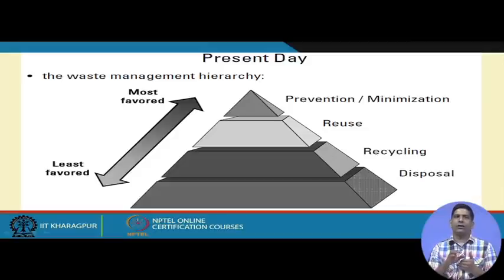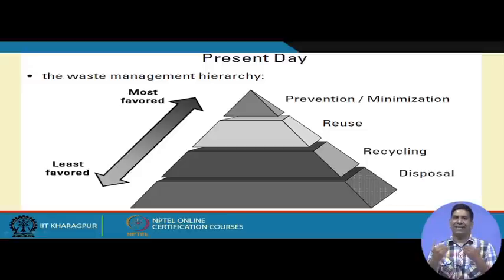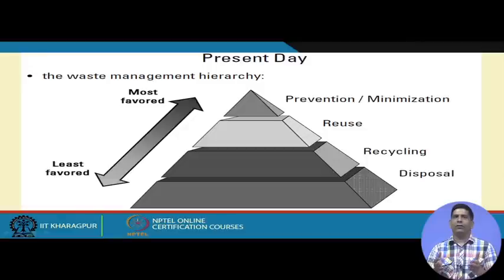That is what the rules say throughout the world, but what is actually happening is kind of the reverse. The different slices of this pyramid are proportional to what percentage goes into different streams. The biggest slice is disposal, so most of the waste is being disposed today. Less is recycled, even less is reduced, and even less is prevented or minimized. This is unfortunate, and it is not only in an Indian context — globally also we have been disposing. Even thermal treatment and incineration plants are considered part of the disposal stream.